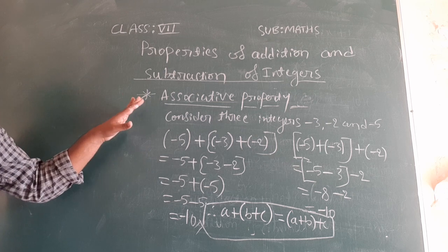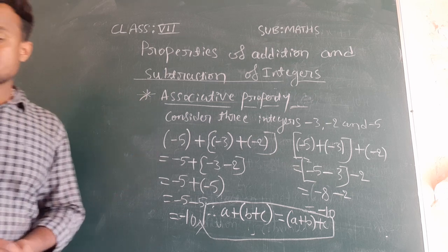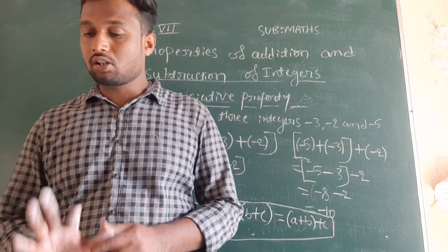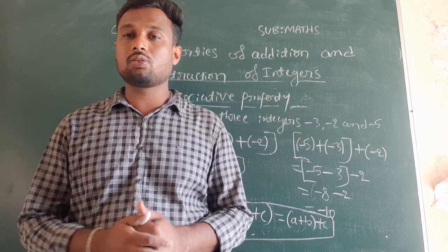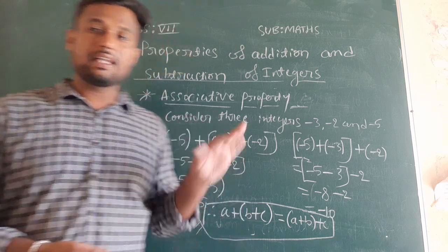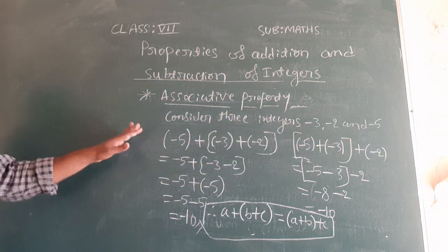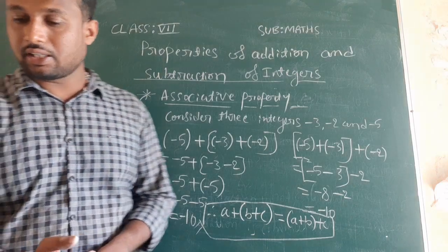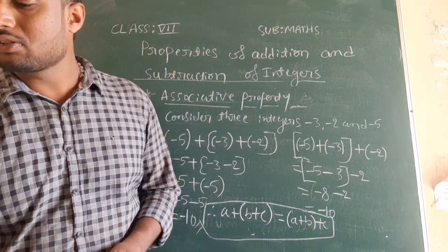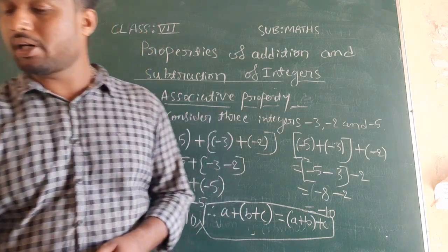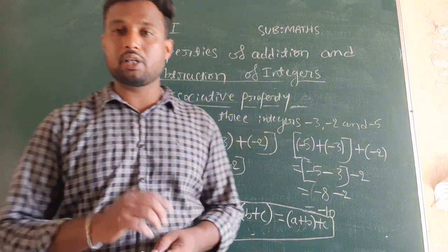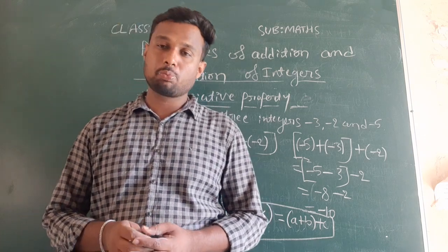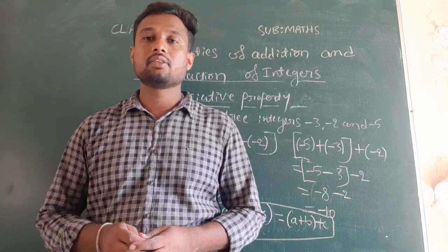Just pause this video and write this. After writing, they have given some more examples in the textbook that are not completely solved — try to solve those examples and give another two or three examples. In the next class I will continue with additive identity, give some more examples related to these properties, and if possible I will start exercise 1.2. Thank you.